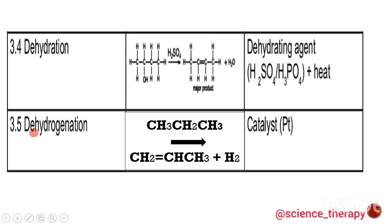The last type of elimination reaction is dehydrogenation — from the name we are extracting hydrogen atoms. We have a straight-chain alkane and react it with a platinum catalyst, extracting two hydrogen atoms to form a double bond, converting the alkane to an alkene.